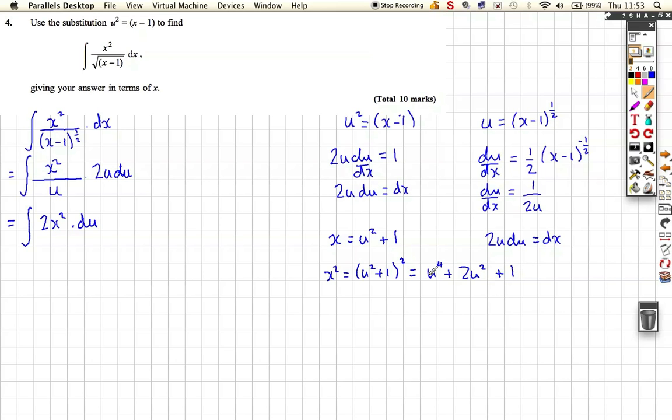So really instead of the x squared we can replace it with all of this. So really this integration can read, well let's put it all out, there's 2u to the four plus 4u squared plus 2 with respect to u. So I've just doubled it because we've got to integrate 2x squared, so I just double this, double this, and double this.